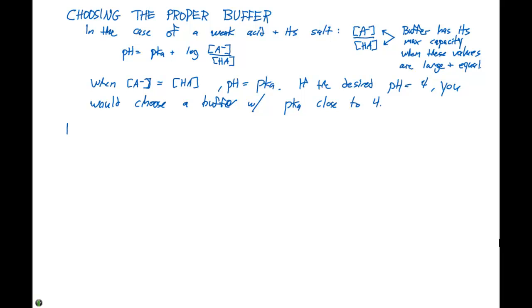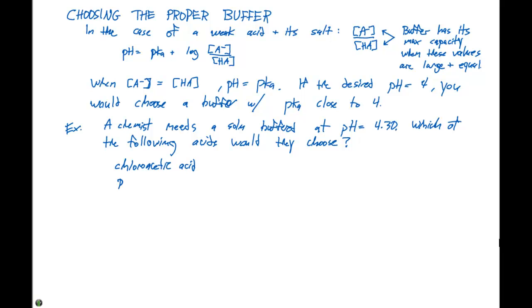Let's look at a particular example. A chemist needs a solution buffered at a pH equal to 4.30. Which of the following acids would they choose? We're going to look at chloroacetic acid, propanoic acid, and hypochlorous acid.